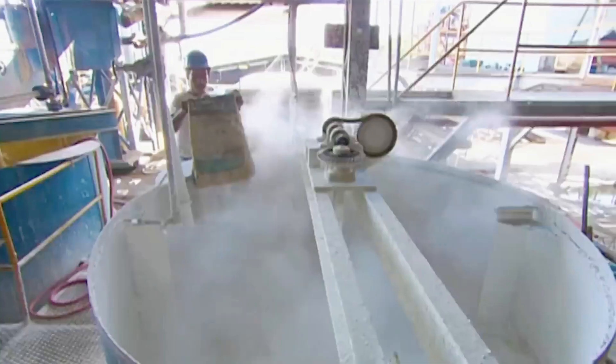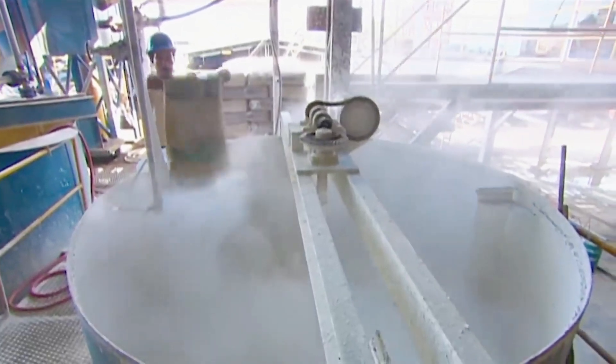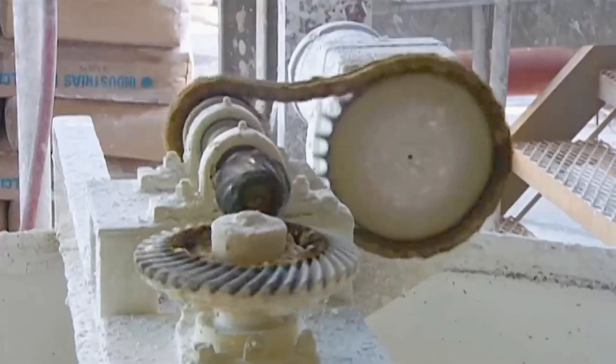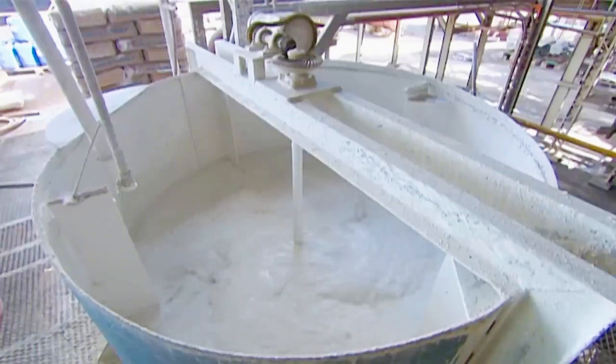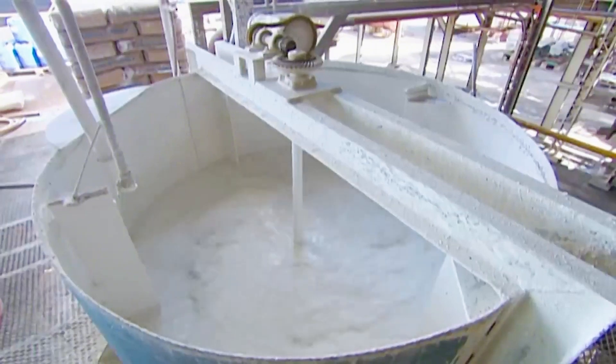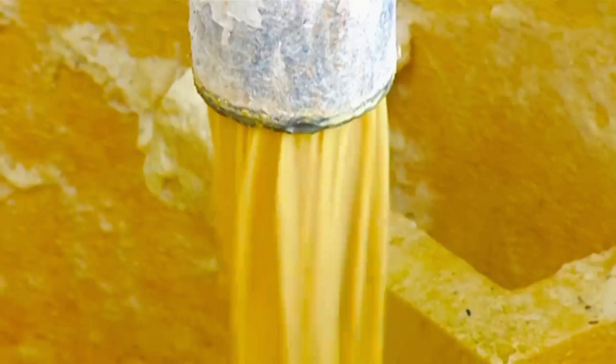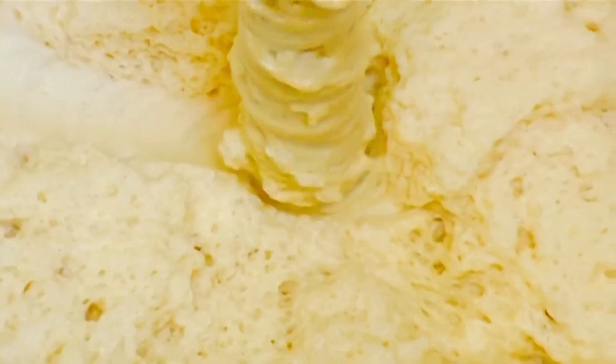Next, the syrup is subjected to crystallization. This is where things get interesting. The syrup is boiled at high temperatures to encourage the formation of sugar crystals. Small seed crystals are added to the mixture, which act as nuclei for larger sugar crystals to form. Over time, the crystals grow in size as the syrup continues to boil and concentrate.